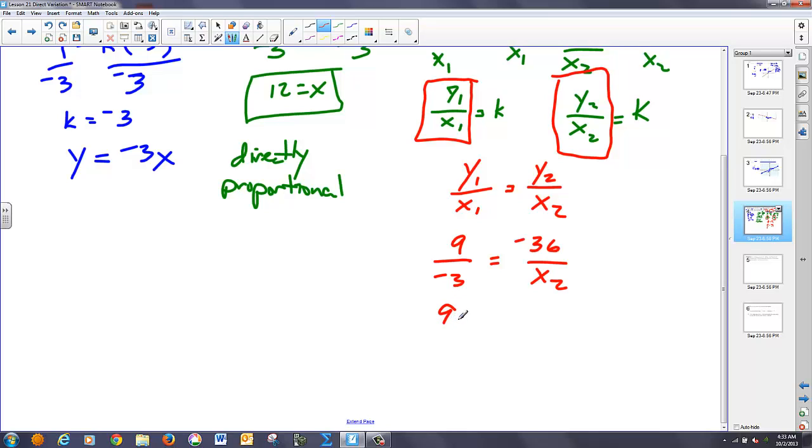So now notice I've got a proportion sitting right here which I could solve using a cross product. I could say 9 times the second x is equal to positive 108. Now I can solve this for x by dividing both sides by 9. And the second x is equal to whatever 108 divided by 9 is. Last time I checked we got 12.